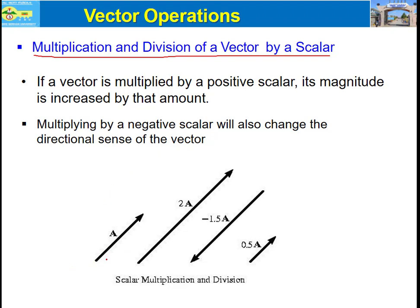For example, if we have vector A and it is multiplied by 2, the resultant vector will be increased by an amount of 2. If vector A is multiplied by negative 1.5, the magnitude of A is increased by 1.5 and the direction of A will also change. If A is multiplied by 0.5, the magnitude of vector A is decreased by 0.5. This is all about multiplication and division of a vector by a scalar.